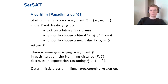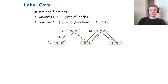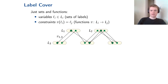To prove hardness, as usual in approximation theory we reduce from a version of label cover. Label cover is a satisfaction problem defined using only sets and functions: every variable has a domain called the set of labels, and we must select one label per variable under constraints that are functions — if we select label a from L1 then we must select a specific label from L2. The figure shows an example with label sets L1, L2, L3 and some functions between them, with a satisfying assignment shown as green diamonds.